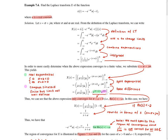We combine the two exponentials in the integrand into a single exponential, giving the next line. We then integrate the exponential, giving the next line. To make things less error prone, I'm going to rewrite s in Cartesian form as s = σ + jω.